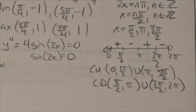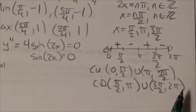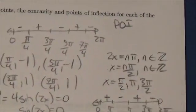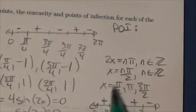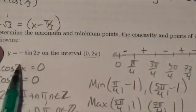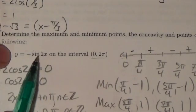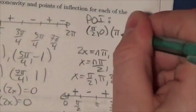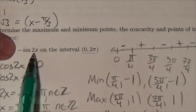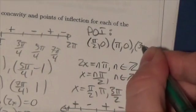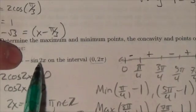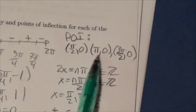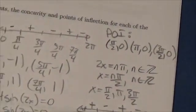Now I need to find the points of inflection. Because the concavity is changing on either side, it's fairly easy to figure those out. My points of inflection occur where x is π/2: plugging into the original, 2 times π/2 is π, sine of π is 0. Next, x equals π: sine of 2π is 0. Then x equals 3π/2: 2 times 3π/2 is 3π, sine of 3π is 0. So my inflection points are (π/2, 0), (π, 0), and (3π/2, 0). That's all this question is asking for.